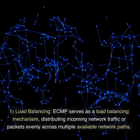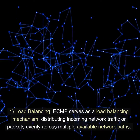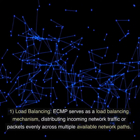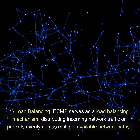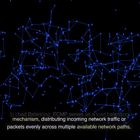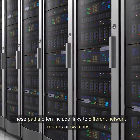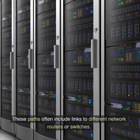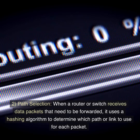1. Load Balancing: ECMP serves as a load balancing mechanism, distributing incoming network traffic or packets evenly across multiple available network paths. These paths often include links to different network routers or switches.